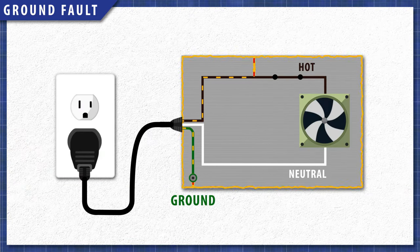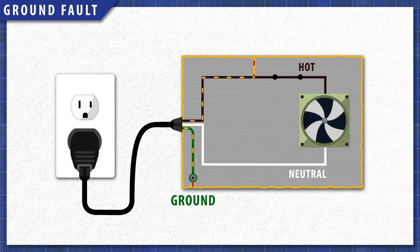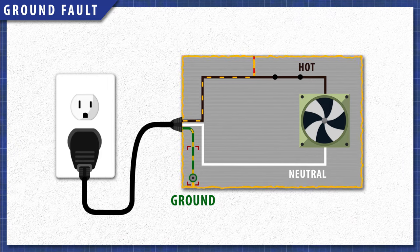A ground fault happens when a hot wire or component touches the metal housing of the appliance. The housing is now energized, and the ground wire returns the electricity to the source.